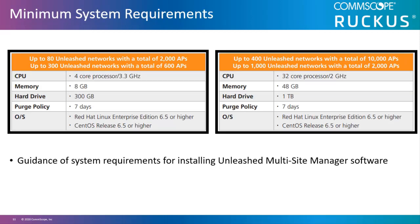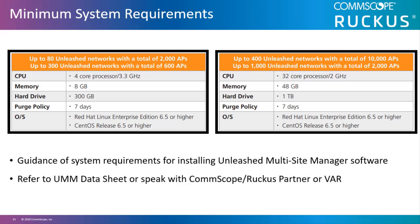This slide shows recommended guidance for system requirements for installing Unleashed Multi-Site Manager software. The smaller configuration supports up to 80 Unleashed networks with a total of 2,000 APs, or up to 300 Unleashed networks with a total of 600 APs. Larger site recommendations are also available. Refer to the CommScope Ruckus UMM data sheet or talk with your local CommScope Ruckus partner or VAR for any questions.